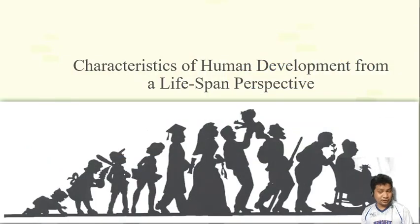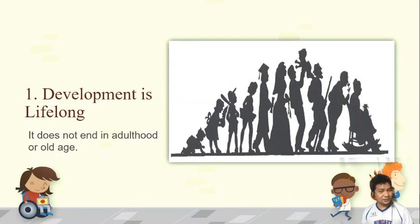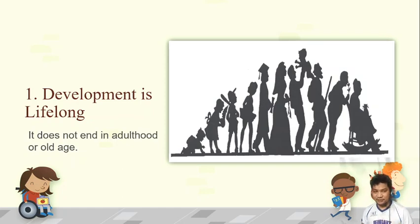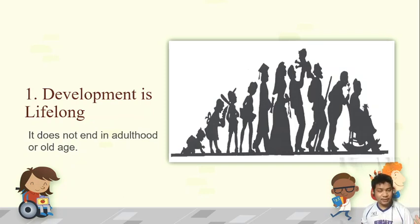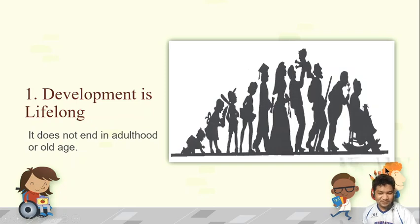The first characteristic is that development is lifelong. As mentioned, in the lifespan approach, as long as you are alive, there is development — it doesn't end in adulthood. Looking at Baby Cecilion, from a very young age, from conception up until old age, he can still develop because he still has life and is still alive.